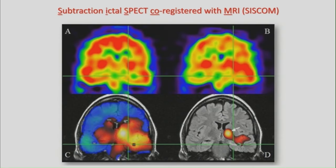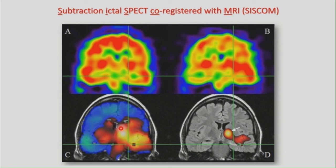For CISCOM, we obtain an interictal and an ictal SPECT scan. These two images are subtracted and co-registered with MRI. The regions in yellow represent brain regions with ictal hyperperfusion and in blue regions with hypoperfusion. It is usual to apply a threshold to show the brain regions with the highest ictal hyperperfusion — in this example a threshold of two standard deviations was used.